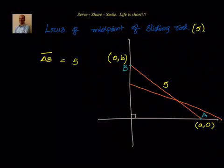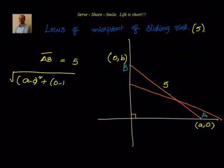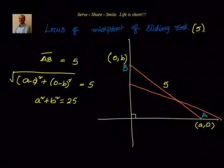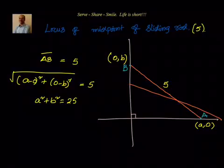The condition that needs to be satisfied is that the length of AB is equal to 5 units. Using the distance formula: square root of (a minus 0) squared plus (0 minus b) squared equals 5. Squaring both sides gives a squared plus b squared equals 25. Let us list values: a equal to 0, b equal to 5.